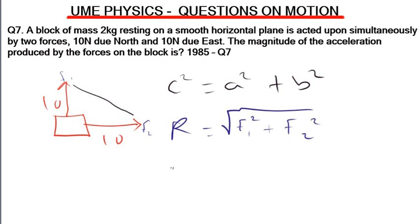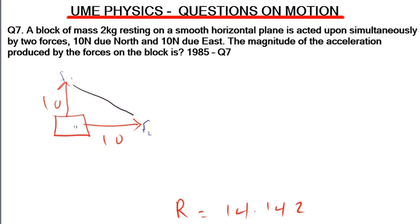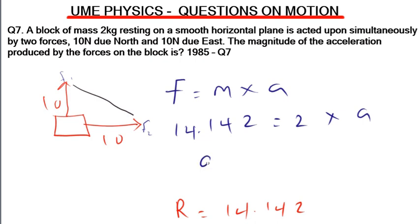The resultant force r = √200 = 14.142 N. Using Newton's second law, F = ma, we get 14.142 = 2 × a, so acceleration = 14.142/2 = 7.071 m/s², approximately 7 m/s². That is the magnitude of the acceleration produced by the two forces on the block.